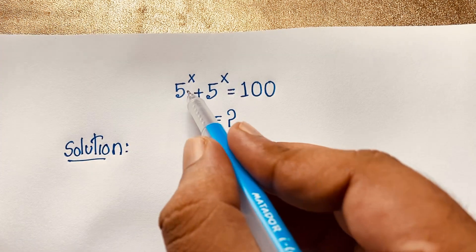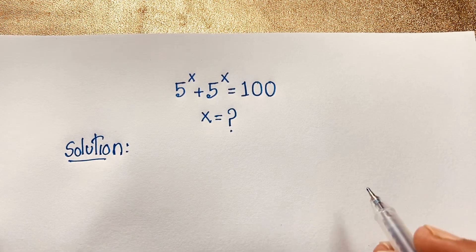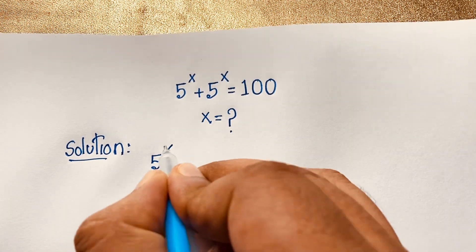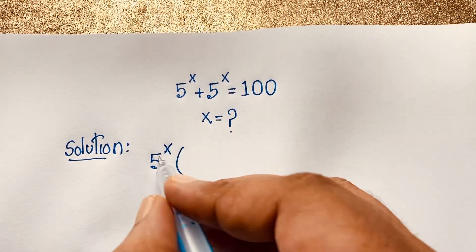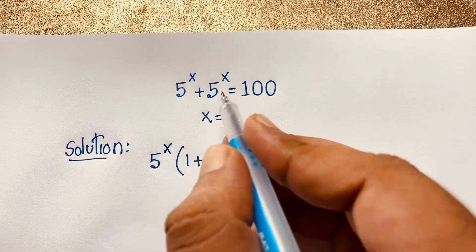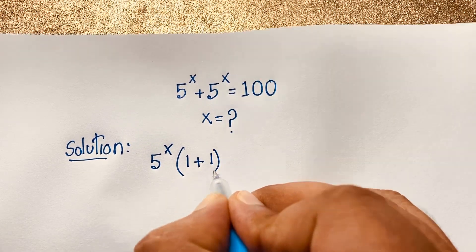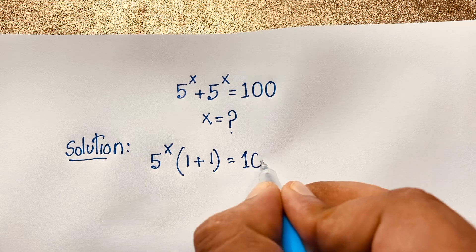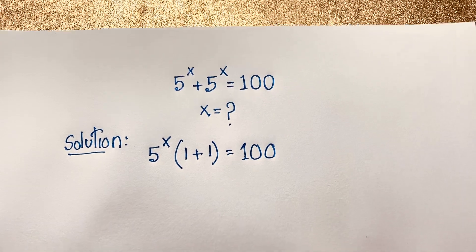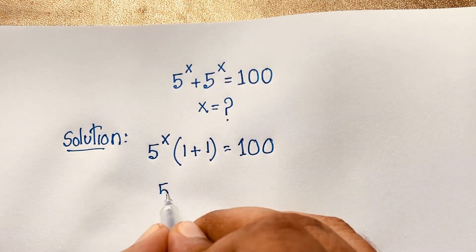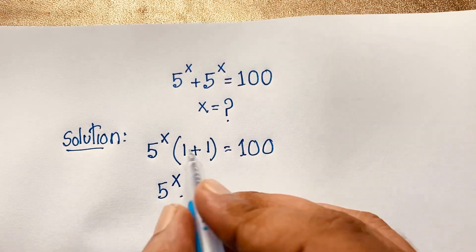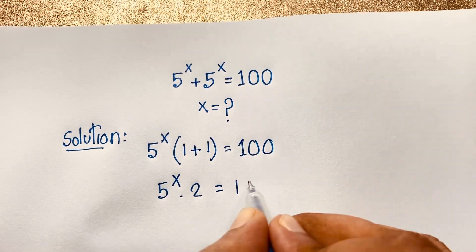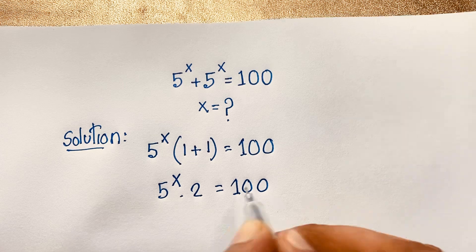Here you can see that 5 to the power x is common. If I take 5 to the power x as a common factor, each term divided by itself gives 1, so we get 5 to the power x times (1 plus 1), which is equal to 100.